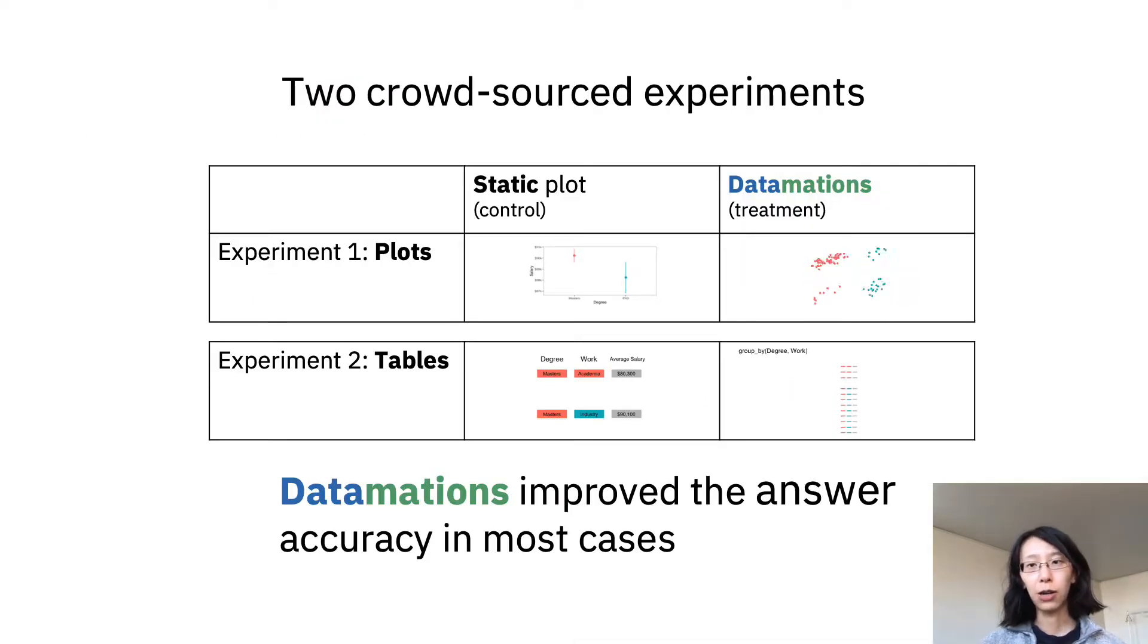We had two experiments. The first experiment was about plots. We asked the same two questions. And there are two conditions, static plots and datamations with plots. The second experiment had the same two conditions, just replaced plots with tables. In both experiments, datamations improved the accuracy in answers in most cases.